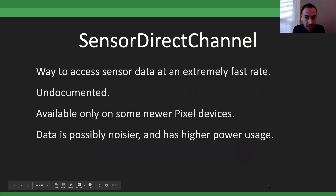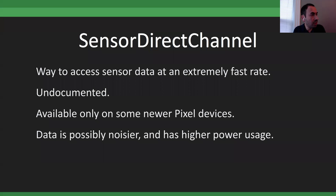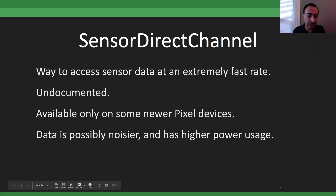If you need more than 400 Hz from the accelerometer, there's an option — highly undocumented — called SensorDirectChannel that Google added a few years ago. On a Pixel 2, instead of the normal ~400 samples/sec, I achieved about 1,700 samples/sec. There are almost no good examples of how to use it — not even from Google. Data is noisier, battery usage is significantly higher, but if you need really fast data for a short period, that's the path.